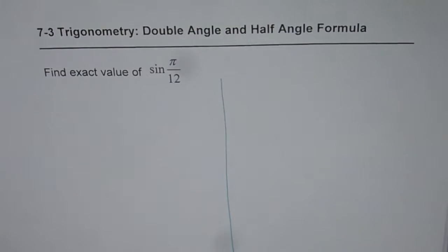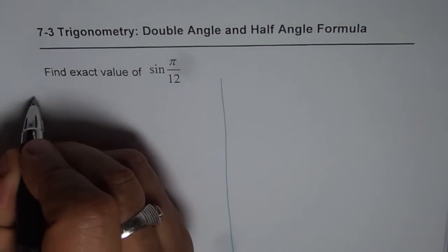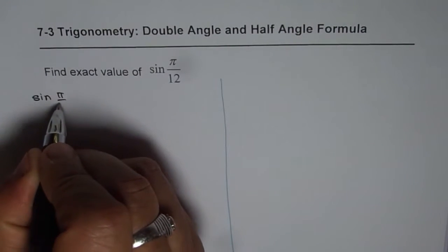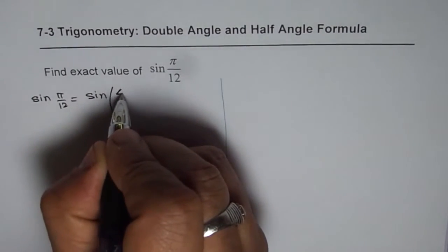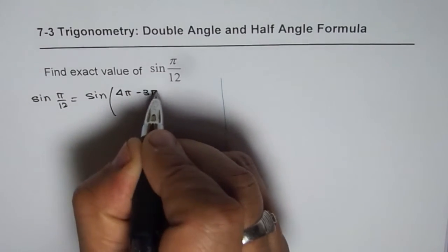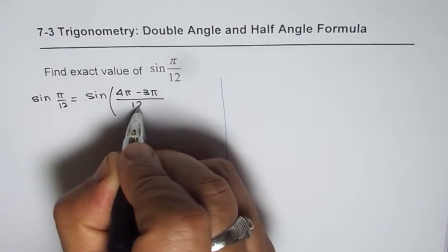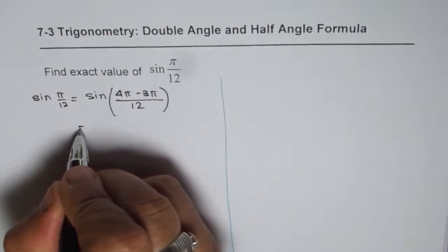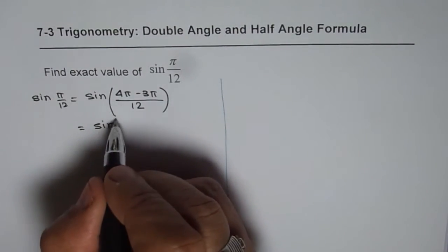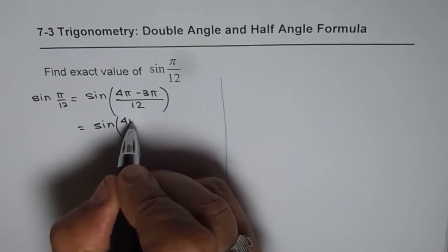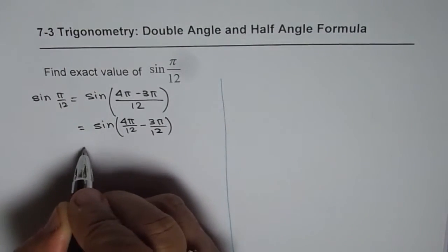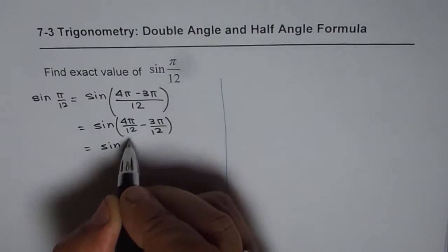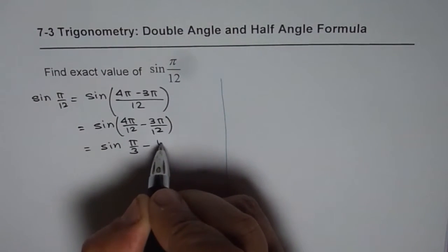I will show you two different solutions for this question. The first approach is to treat sine(π/12) as sine of (4π - 3π) divided by 12. We can write this as sine of (4π/12 - 3π/12), which gives us sine of (π/3 - π/4).